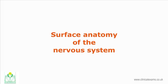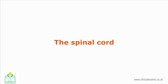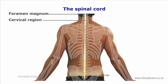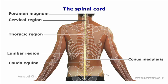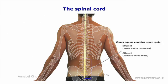Surface anatomy of the nervous system: the spinal cord. The spinal cord is a continuation of the brainstem as it emerges from the foramen magnum of the occipital bone. It continues through the cervical and thoracic regions and ends at the level of the first lumbar vertebra as the conus medullaris. Within the spinal canal from L1 down to the end of the sacrum, the spinal canal houses the cauda equina.